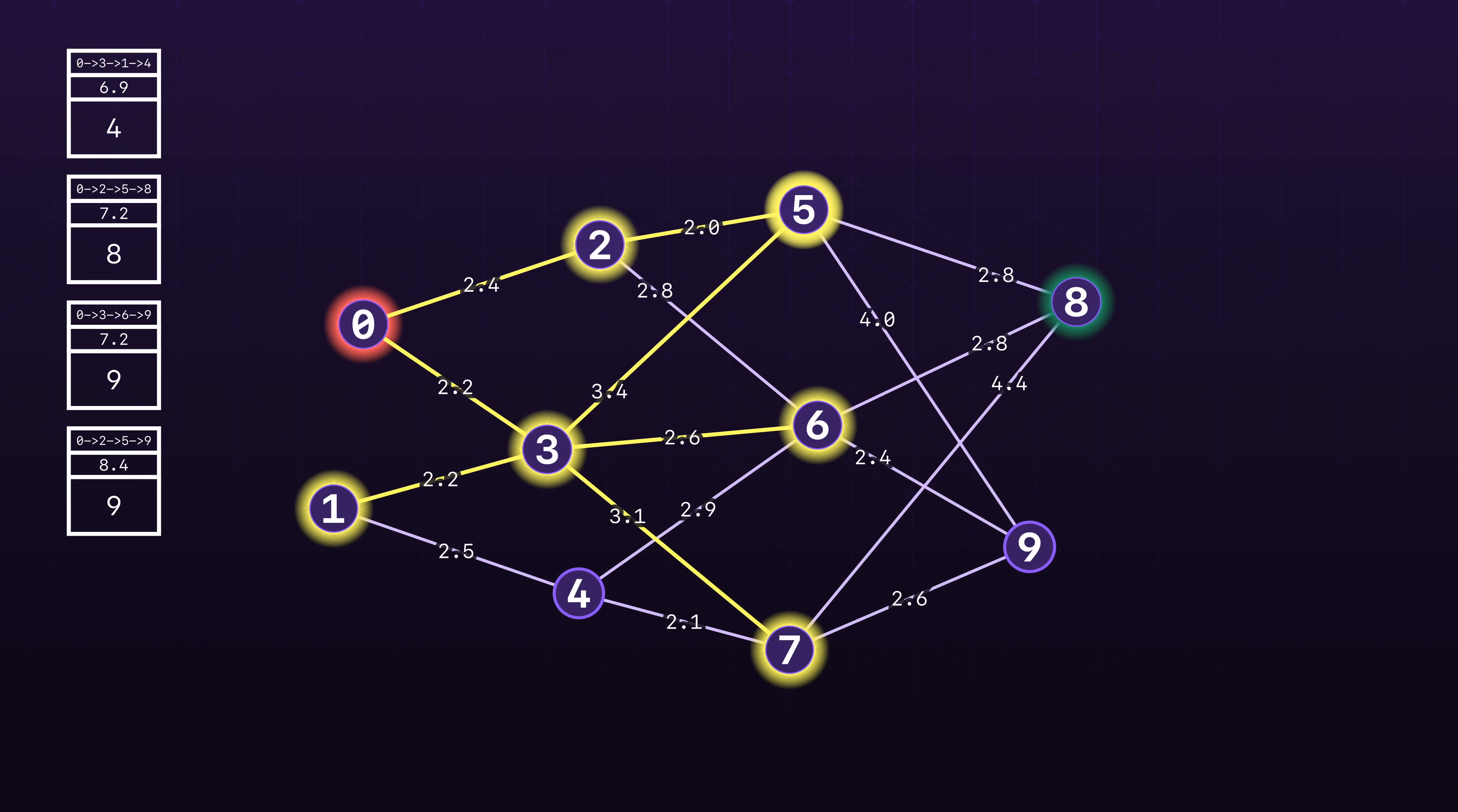We continue this process until we pop off the goal state, which gives us the optimal path from node 0 to node 8. This happens to have cost 7.2 in this example.